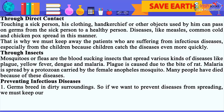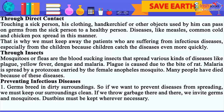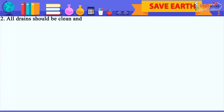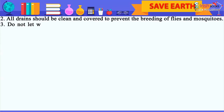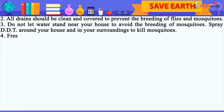Preventing Infectious Diseases: 1. Germs breed in dirty surroundings. So if we want to prevent diseases from spreading, we must keep our surroundings clean. If we throw garbage here and there, we invite germs and mosquitoes. Dustbins must be kept wherever necessary. 2. All drains should be clean and covered to prevent the breeding of flies and mosquitoes. 3. Do not let water stand near your house to avoid the breeding of mosquitoes. Spray DDT around your house and in your surroundings to kill mosquitoes.